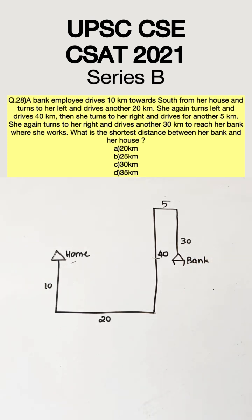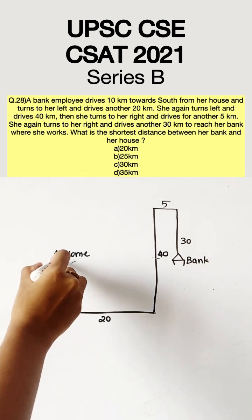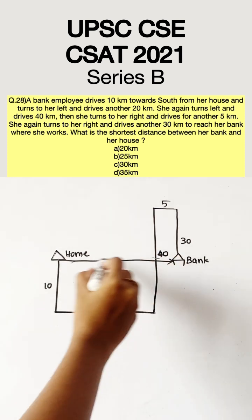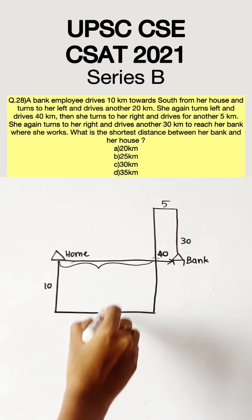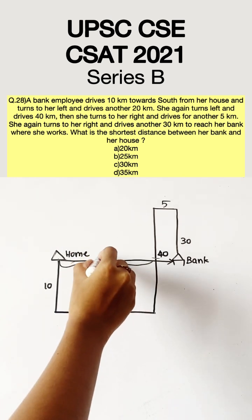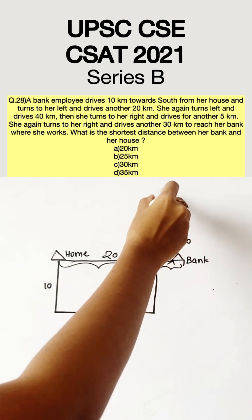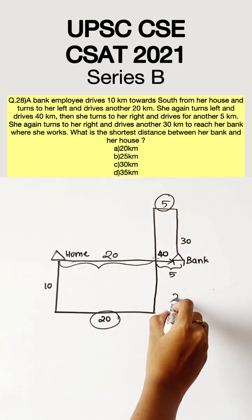What is the shortest distance between her bank and her house? That would be a straight line from the house to the bank. This distance would be the same as the distance here, which is 20 kilometers, and this distance would be the same as this distance, which is 5 kilometers, since they are parallel to each other.